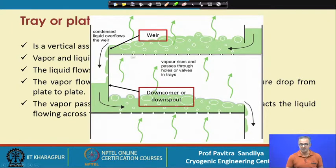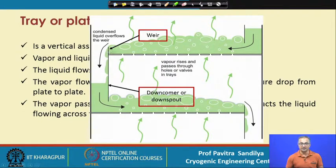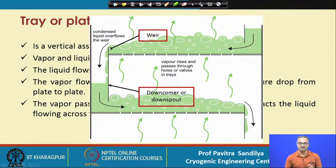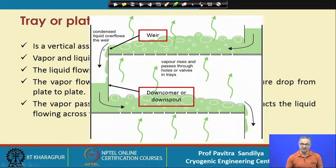Here is a typical figure of a plate column. We can see plates with holes through which the vapor moves out. At one end of the plate there is a weir — this weir helps in retaining some of the liquid on the plate. Without the weir, we would not be able to retain the liquid, and if we do not have enough liquid on the plate there will not be proper mixing between the vapor and the liquid. The height of the weir also has to be adjusted — too much height makes it difficult for the liquid to flow out.